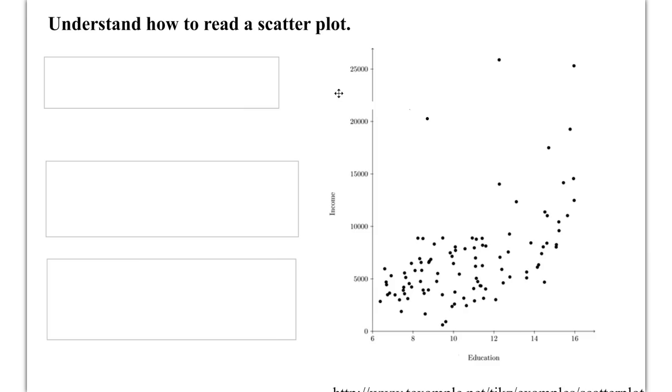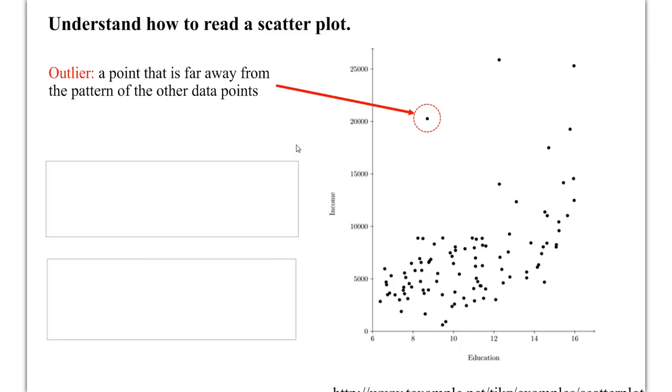What we're trying to do is identify a pattern. You'll notice that a lot of the data seems to fit some kind of general upward trend here, but there are clearly some outliers that are a little bit out there. So any point that's far away from the general pattern, we're going to consider an outlier.